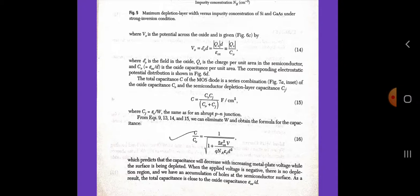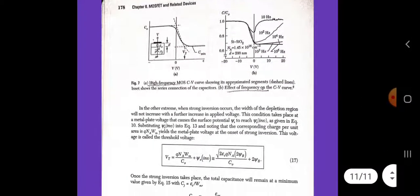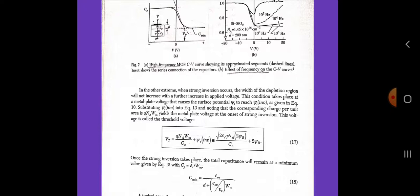In the other extreme, when strong inversion occurs, the width of the depletion region will not increase with further increase in applied voltage. This condition takes place at a metal plate voltage that causes surface potential psi_s to reach psi_s(inversion). Substituting psi_s(inversion) and noting that the corresponding charge per unit area is qNaWm yields the metal plate voltage at the onset of strong inversion. This voltage is called the threshold voltage Vt, given by qNaWm divided by C_0 plus psi_s(inversion).